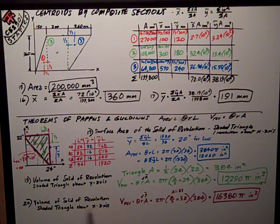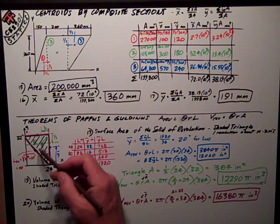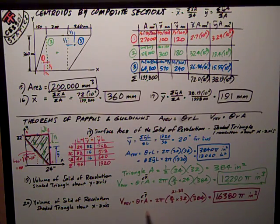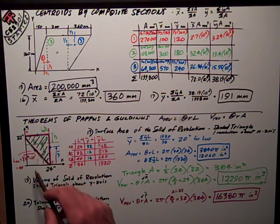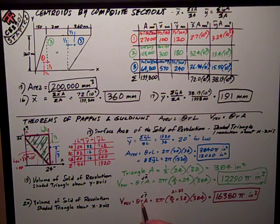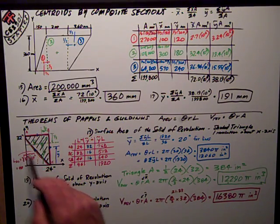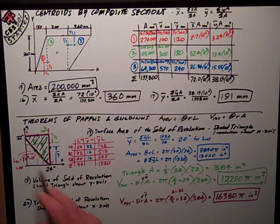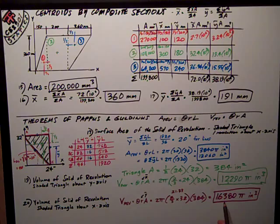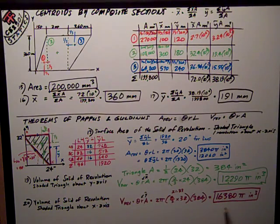Finally, 20 is the solid of revolution about the x-axis. So I need my y-bar distance. The other numbers are the same, 2π and 384 for the area. But this time my y-bar distance, which is r, is for a triangle. It's two-thirds from the tip. So that's two-thirds of 32. The number works out to be 16,380π inches to the third.